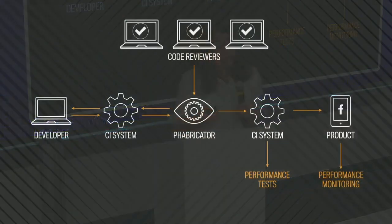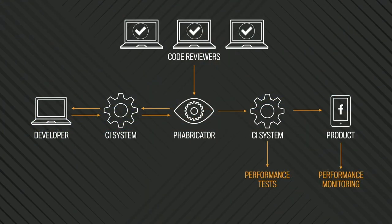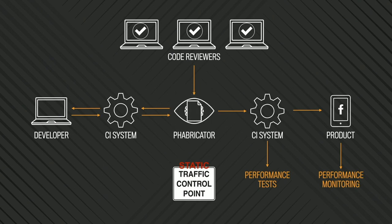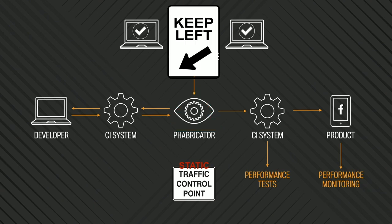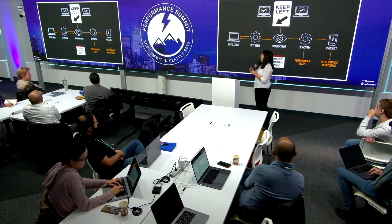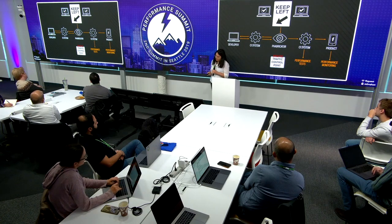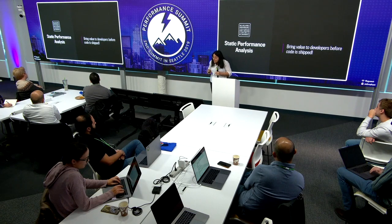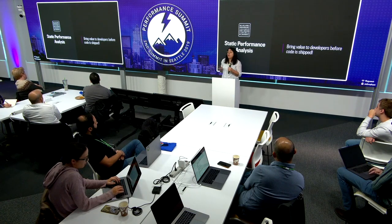Our aim is to do it in a way that such issues don't hit production — we want to detect them before they hit production. So at this phase, we are like a static traffic control point, and we will tell developers, without them running the code, if there are any issues with performance. And if there is an issue, we'll say, wait a second — take a look and reconsider. Our whole aim is to shift this performance analysis to the left, to the less costly part. The right-hand side is very costly and not always possible. So we want to shift left, and our overarching aim is to bring value to developers before code is shipped.